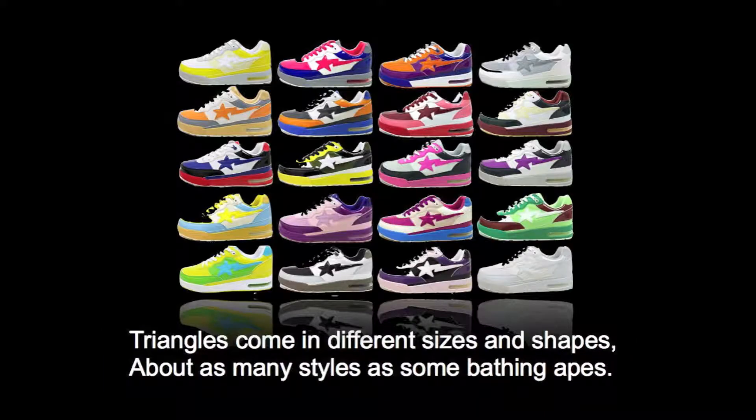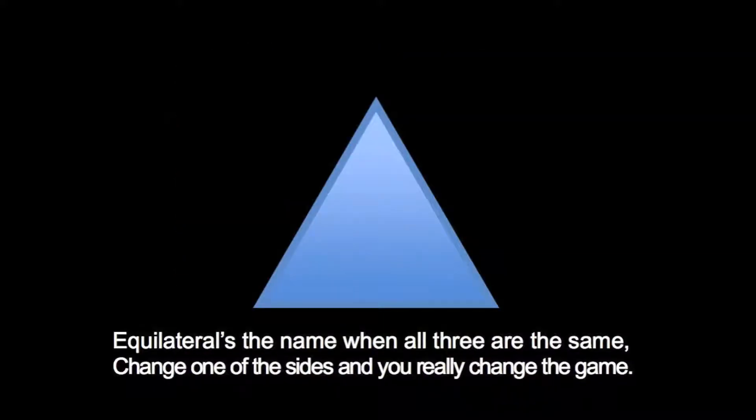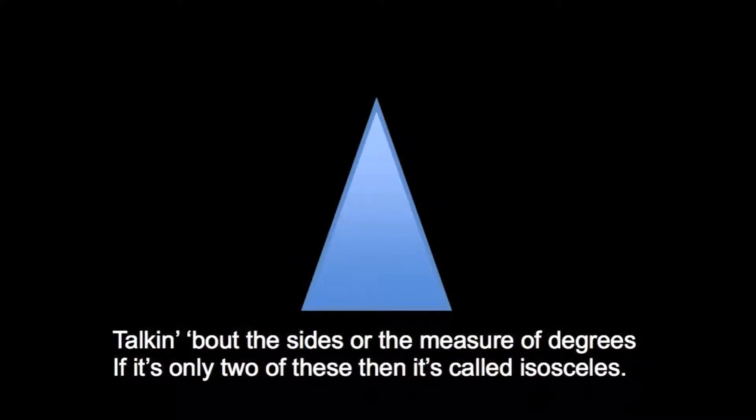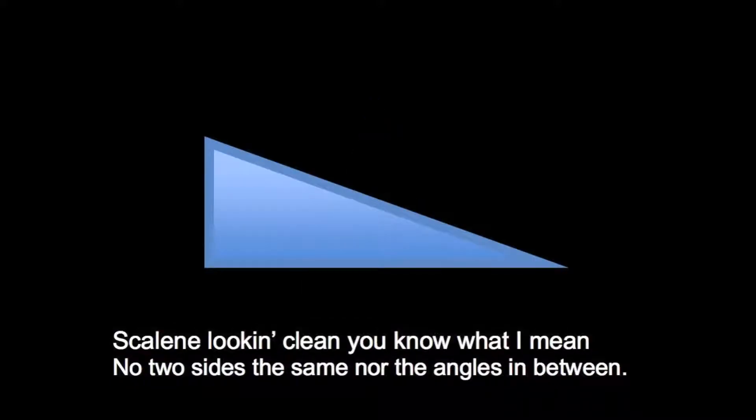Triangles come with different sizes and shapes, as bad as many styles let them bathe in names. Equilateral is the name when all three are the same. Change one of the sides and you really change the game. Talk about the sides or the measure of degrees. If it's only two of these then it's called isosceles. Scalene looking clean, you know what I mean. Not two sides the same or the angles in between.